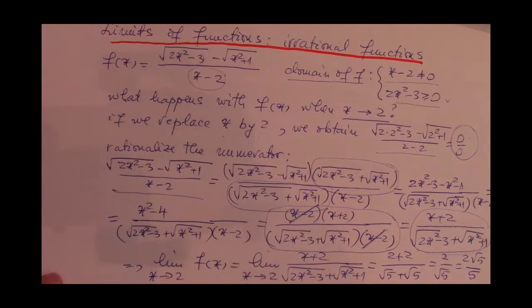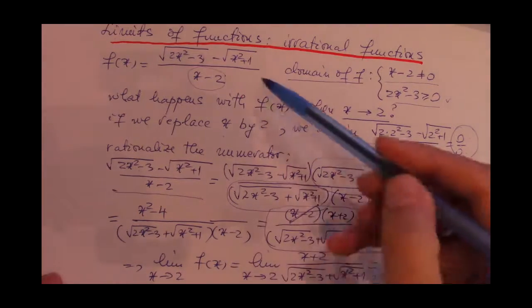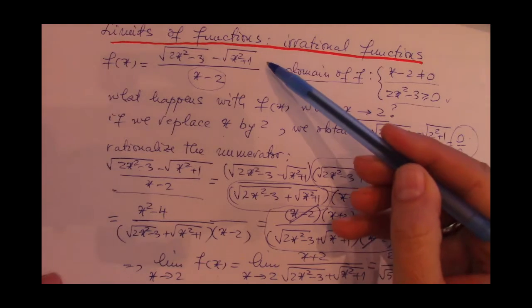And if we replace x by 2 in this expression, we get a decent number. So it turns out that the limit that we were looking at from the very beginning of this video is 2 times the square root of 5 over 5.